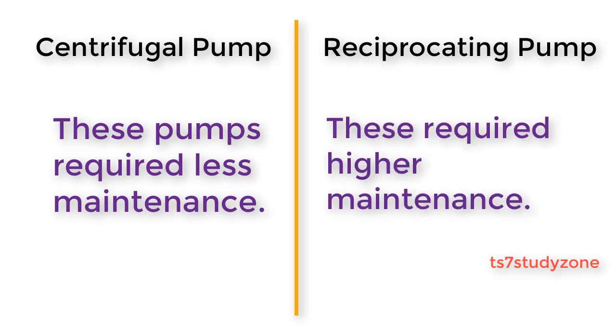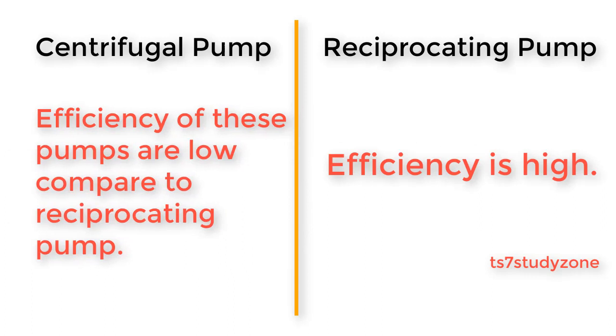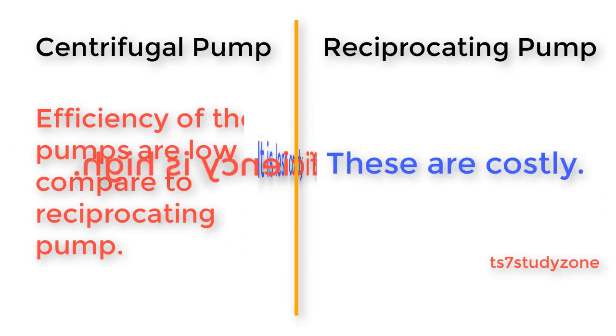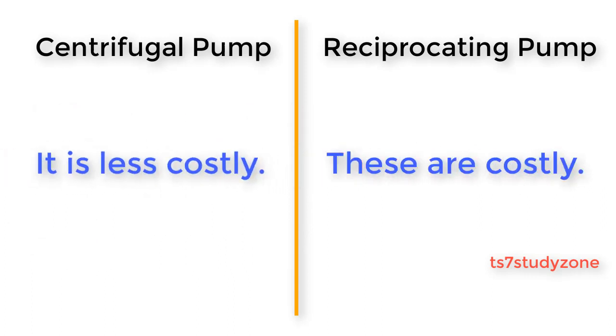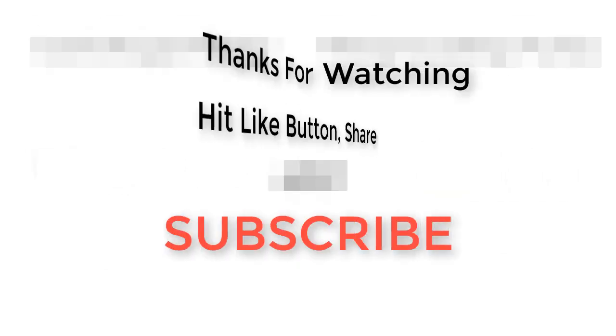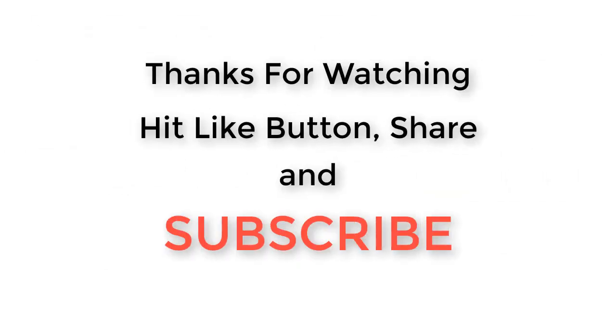The efficiency of centrifugal pumps is low, while the efficiency of reciprocating pumps is high. Centrifugal pumps are less costly, whereas reciprocating pumps are more costly.